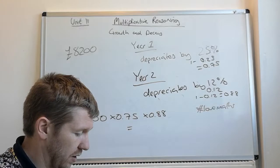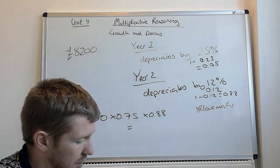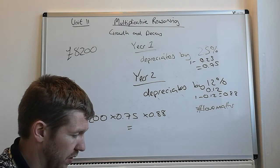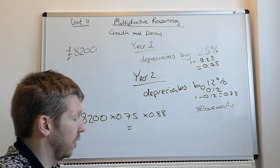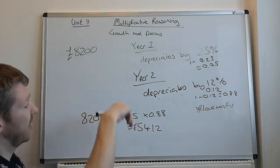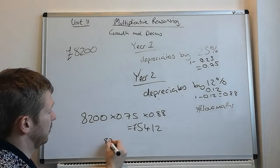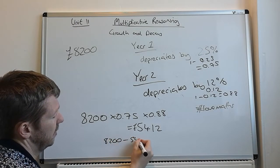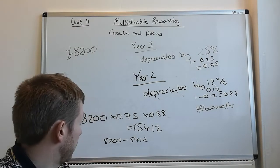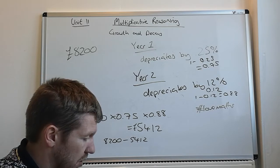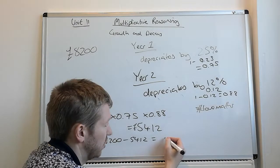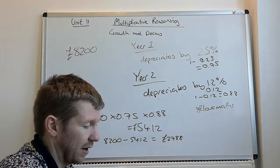So, again, I'm going to do it on the calculator. 8,300 times by 0.75 times by 0.88. 5,412 pounds. Lovely. And again, you can work out how much she's lost by doing 8,200 take away 5,412. Probably, using the word loss isn't right there, because obviously she's been using it for a couple of years and hopefully she'll be enjoying it. So, the amount that it's gone down is 2,788 pounds of value.